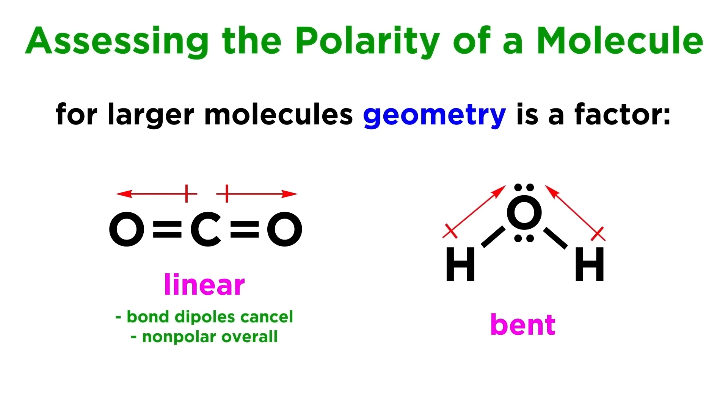Water has a bent molecular shape due to the lone pairs on the oxygen atom that cause it to adopt a tetrahedral geometry, so the individual bond dipole moments point slightly in the same direction. That means when we add them together, there will be a net dipole moment, and therefore water is a polar molecule.